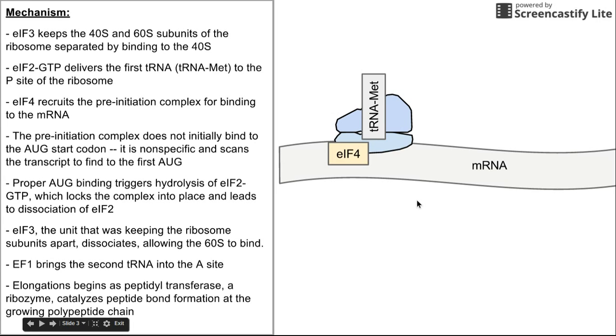Elongation factor 1-alpha comes in with the second tRNA and brings it directly to the A-site. This is an elongation factor that's carrying the second tRNA.